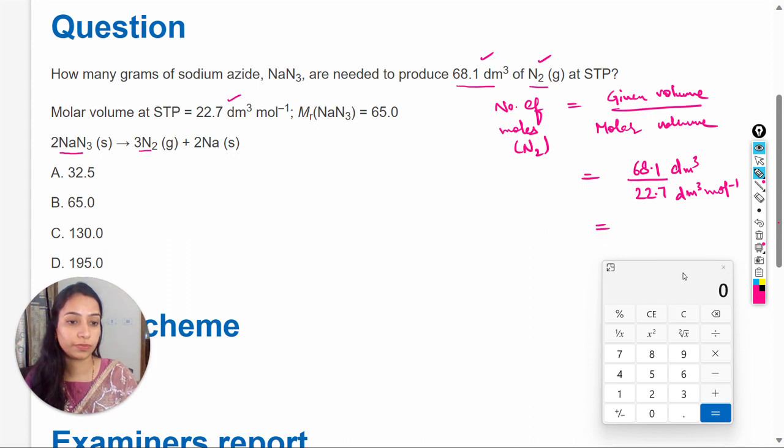So the number of moles is 3. The units work out to moles, so 3 moles of N2 gas are produced.